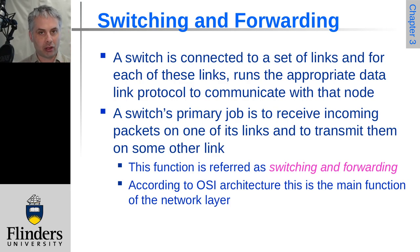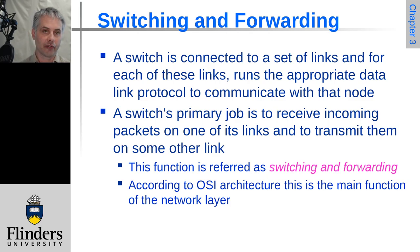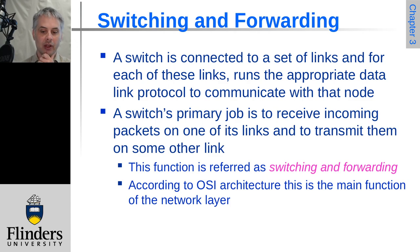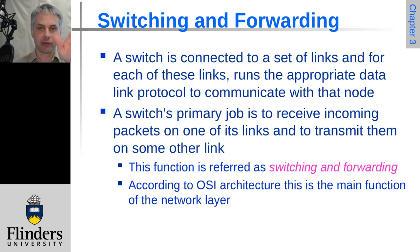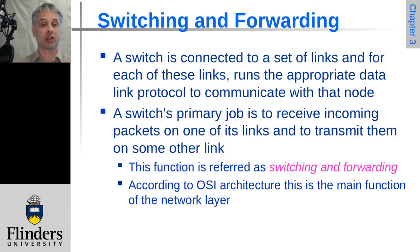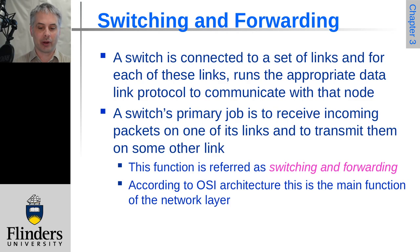There are two steps. First is deciding where the frame needs to go — the switching part, or setting the points. If you're into agriculture, it's like drafting livestock and moving the drafting gate to choose which way they go. The second step is the actual movement of the frame — the train moving over the switch or points, the animal moving through the drafting gates, or for the switch, the frame actually being copied out onto the link where it should go.